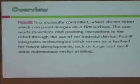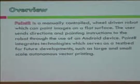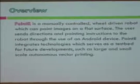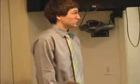This gives an overview of the project, taken from our poster on the fourth floor. It's a manually controlled, wheel-driven robot which can paint images on a flat surface. You can put it down on a large piece of butcher paper, outside on the sidewalk, on the driveway, or wherever you want. The user sends directions and painting instructions to the robot through an Android device. We developed our own custom software, which Clarence will go over shortly. Painter integrates technologies serving as a test bed for future developments such as large and small scale autonomous vector printing.